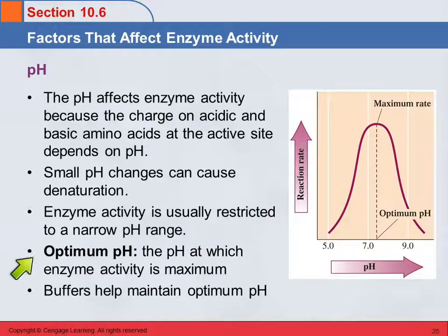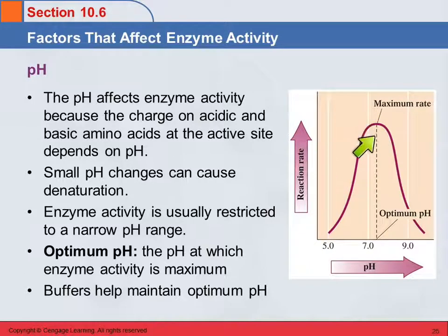Optimum pH is the pH at which enzyme activity is at a maximum. We see a bell curve going from pH 5 up to about pH 7.4. Most of your body is at pH 7.4, and if the pH rises above that, the activity of the enzymes goes down. Enzyme activity is usually restricted to a very narrow pH range, which is why your body has buffer systems in place to maintain the pH of your blood and intracellular fluids. Any imbalance like acidosis — where your blood becomes too acidic — causes a lot of problems because it affects the enzyme activity, and enzymes are what control the reactions in your body.